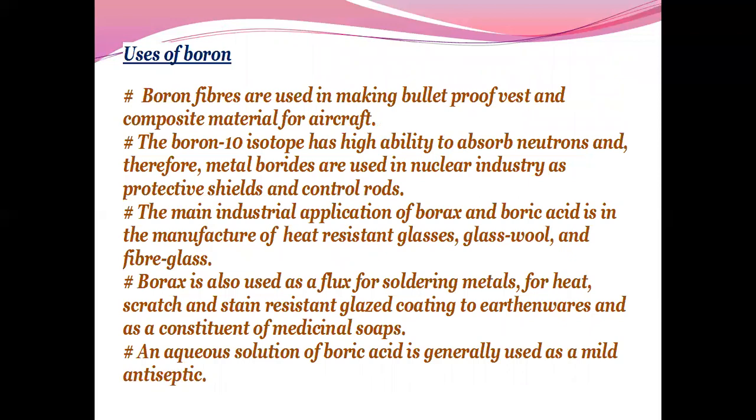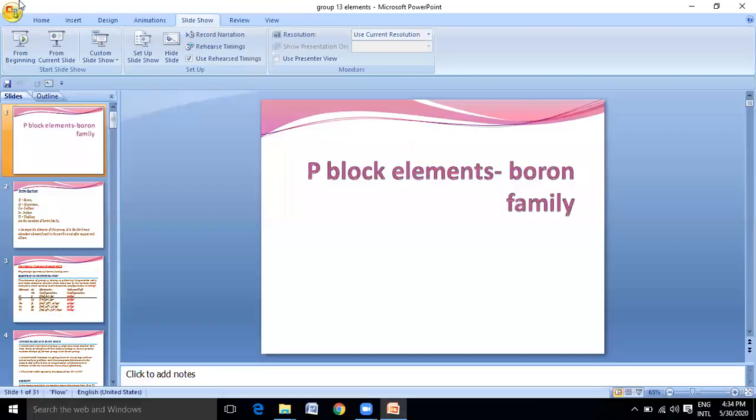Uses of boron: Boron fibers are used in making bulletproof vests and composite materials for aircraft. The boron-10 isotope has high ability to absorb neutrons and therefore metal borides are used in nuclear industry as protective shields and control rods. The main industrial application of borax and boric acid is in the manufacture of heat-resistant glass, glass wool and fiberglass. Borax is also used as a flux for soldering metals, for heat, scratch and stain-resistant glazed coating to earthenwares and as a constituent of medicinal soap. An aqueous solution of boric acid is generally used as a mild antiseptic. This is what we discussed for the group 13 elements as a part of the topic.